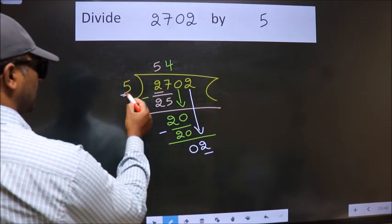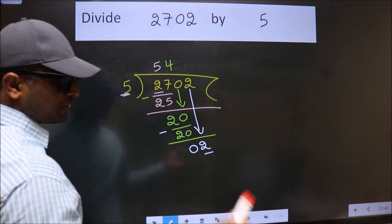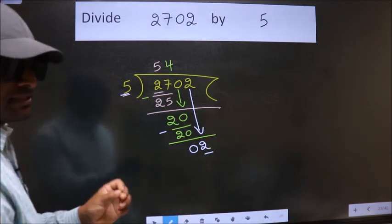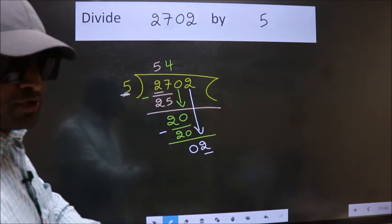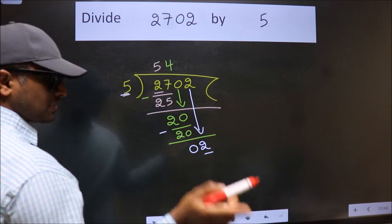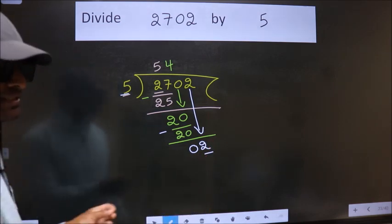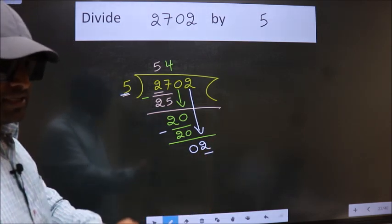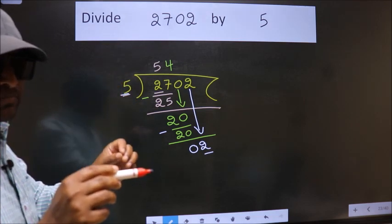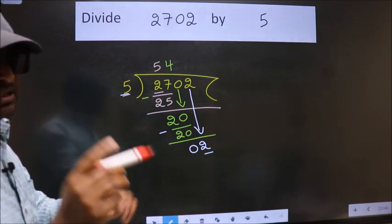And the mistake is this: here we have 2, here 5. 2 is smaller than 5. So what many do is they directly put dot, take 0, which is wrong. Why is it wrong? Because just now you brought this number down. And in the same step, you want to put dot, take 0, which is wrong. I repeat, bring down the number and also put dot, take 0—both at the same step—you should not do.